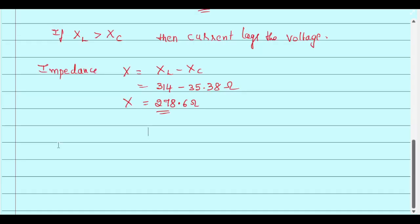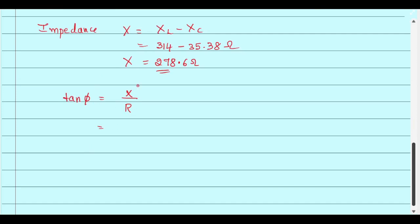We will find the phase difference between the current and the voltage. The phase angle between current and voltage is given by tan phi equal to X by R. Tan phi is given by X by R. X is nothing but 278.6 ohms.